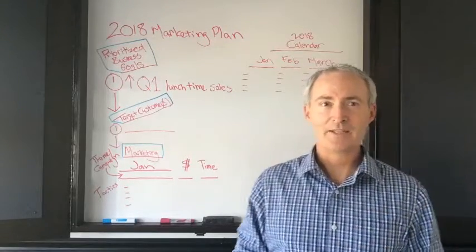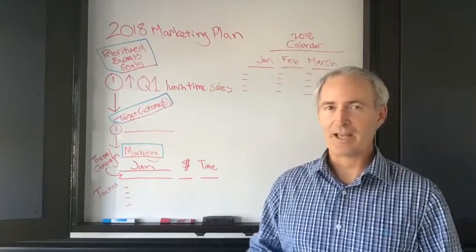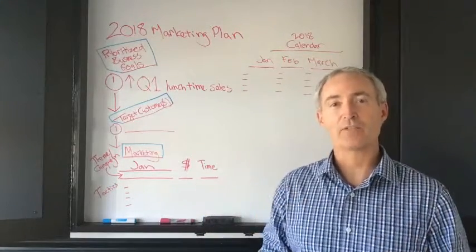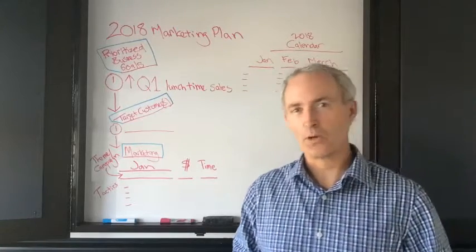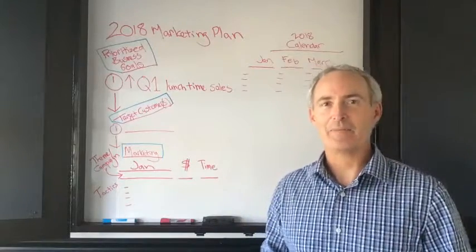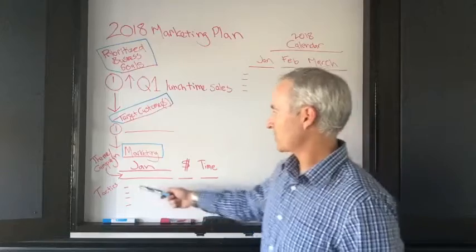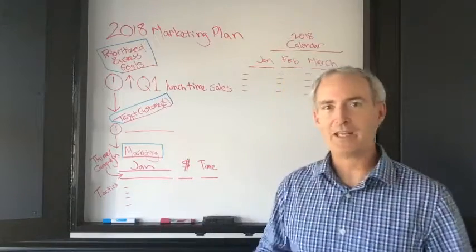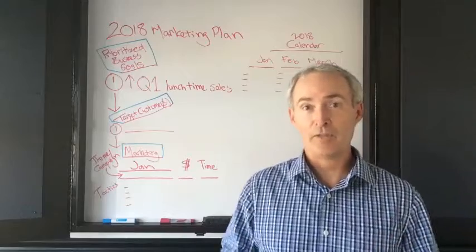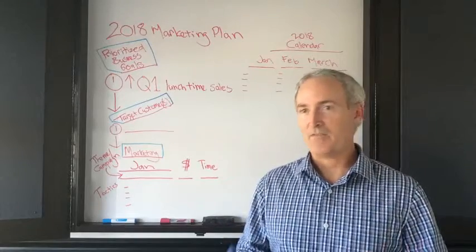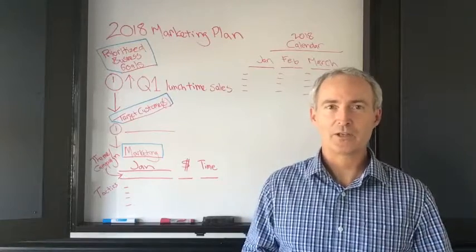The next step is to figure out what tactics you're going to use. This falls back on those conversations you've had with your target customers — they basically told you where to advertise and where to be to find them and get their attention. So this is where you list the tactics: it could be an email newsletter, social media, partnering with influencers, events, or sponsoring events — a variety of things that you're going to implement.